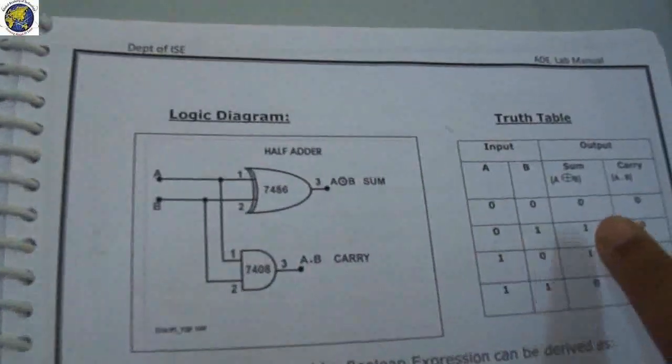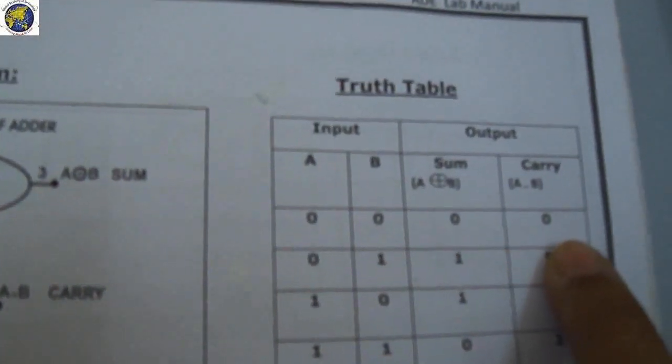The next condition is A is 0 and B is 1. You will get sum 1, carry 0.